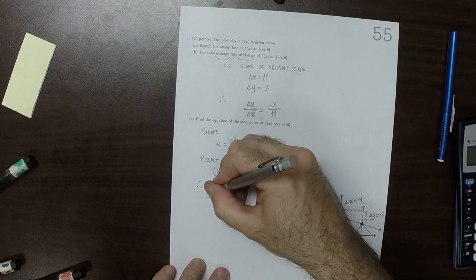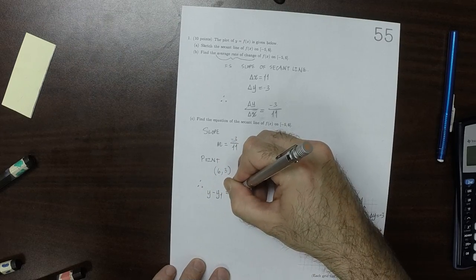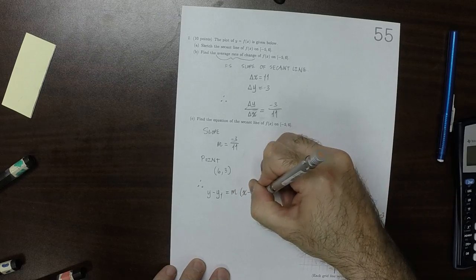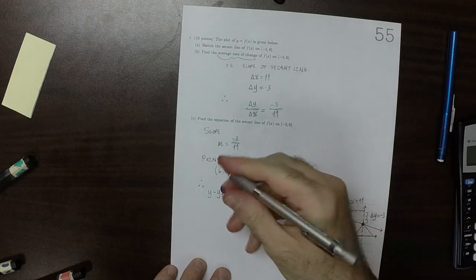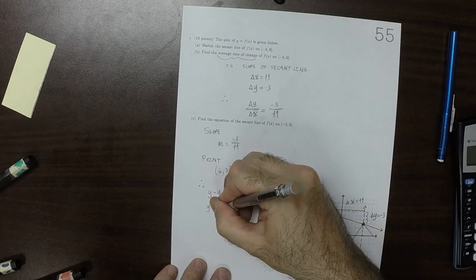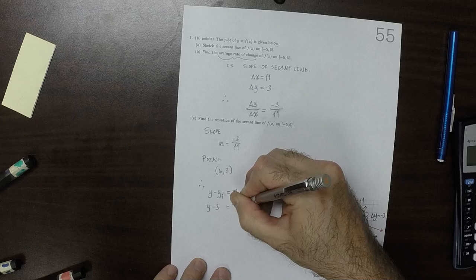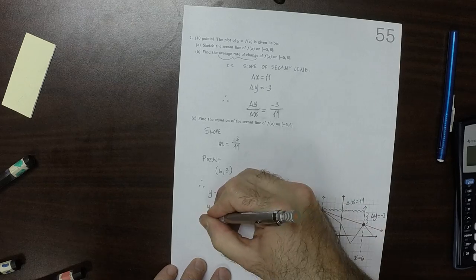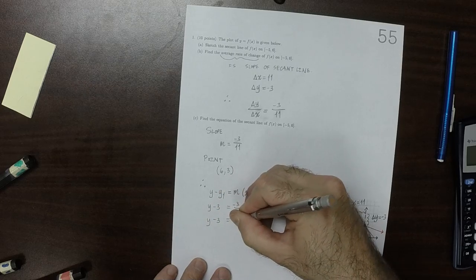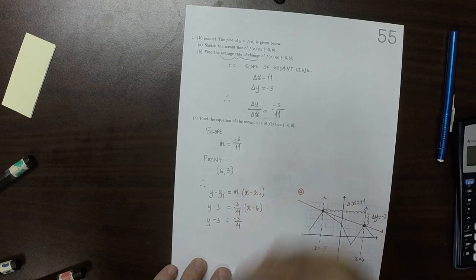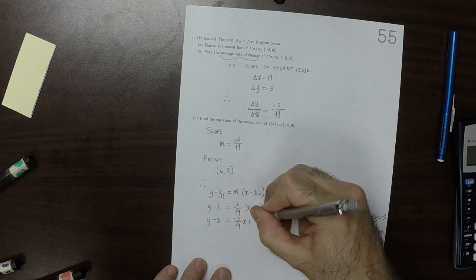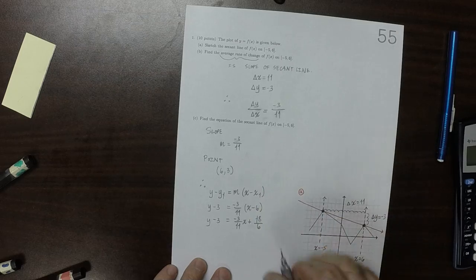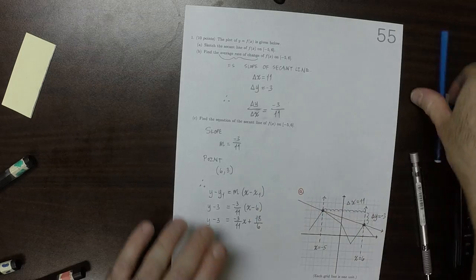Therefore, Y minus Y1 is M, X minus X1. So Y minus 3 is negative 3 over 11 times X minus 6. Y minus 3 is negative 3 over 11, X plus 18 over 11.